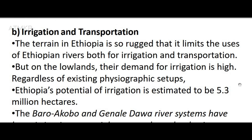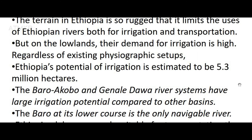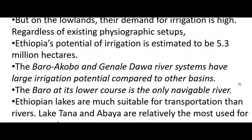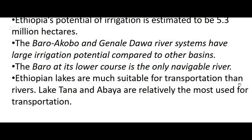B. Irrigation and Transportation: The rugged terrain in Ethiopia limits the use of Ethiopian rivers for both irrigation and transportation. But on the lowlands, demand for irrigation is high. Regardless of existing physiographic setups, Ethiopia's potential of irrigation is estimated to be 5.3 million hectares. The Barro-Akobo and Ghanal-Wabishebele systems have large irrigation potential compared to other basins. The Barro-Akobo is the only navigable river. Ethiopian lakes are much more suitable for transportation than rivers; Lake Tana and Abaya are relatively the most used for transportation.